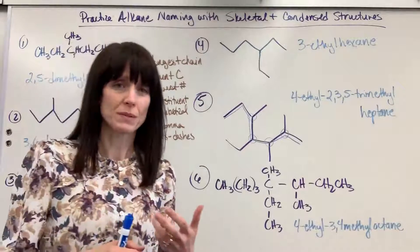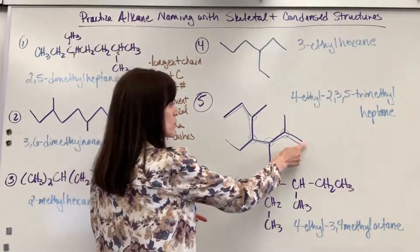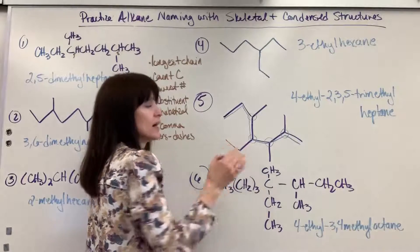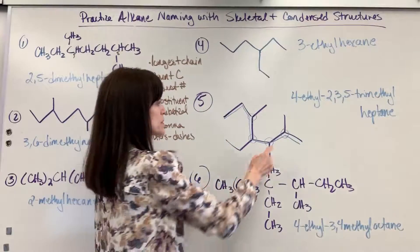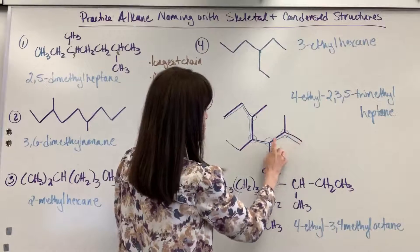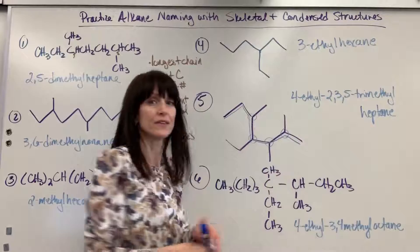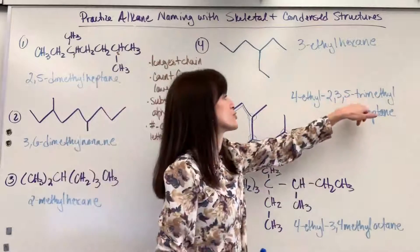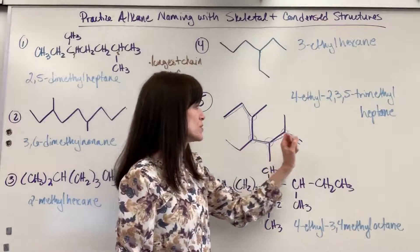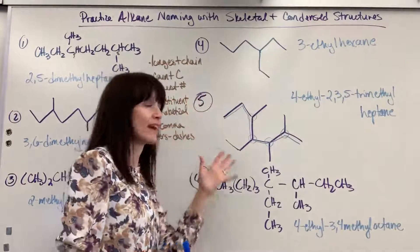When you have multiple substituents you always write them in alphabetical order. We're going to write the ethyl first — it's located at carbon four, because there are two carbons there. Then let's do our methyl groups — they are at positions two, three, and five. There are three methyl groups — that's trimethyl. And our parent chain had seven carbons, all single bonded — heptane. So: four-ethyl-two,three,five-trimethylheptane. Wow, good job.